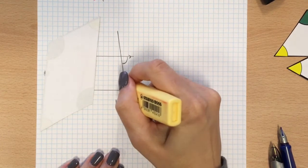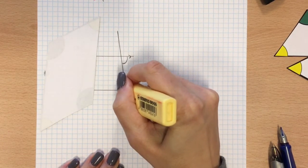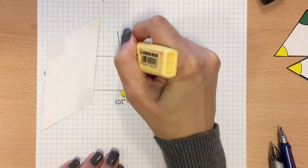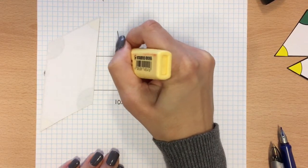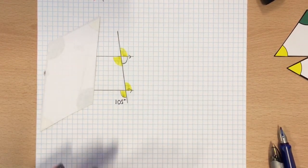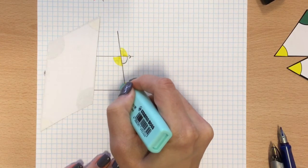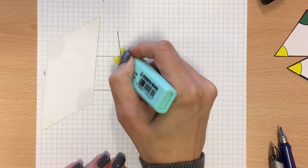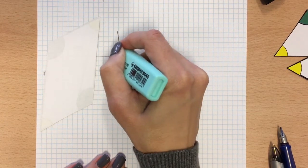So if we said this angle here was yellow, this one's going to be yellow, so is this one, and so is this one. Then I know that this one is going to be a different colour, so it's going to be green, and so is this one, so is this one, and so is this one.